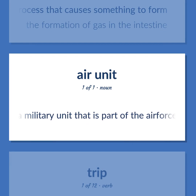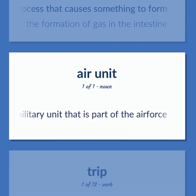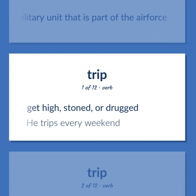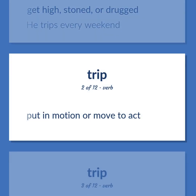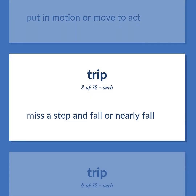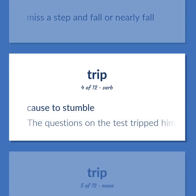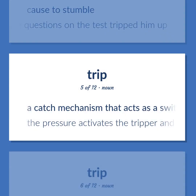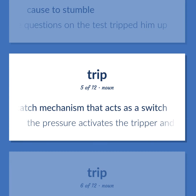A military unit that is part of the air force. Trip: Get high, stoned, or drugged — he trips every weekend. Put in motion or move to act. Miss a step and fall or nearly fall. Cause to stumble — the questions on the test tripped him up. A catch mechanism that acts as a switch — the pressure activates the tripper and releases the water.